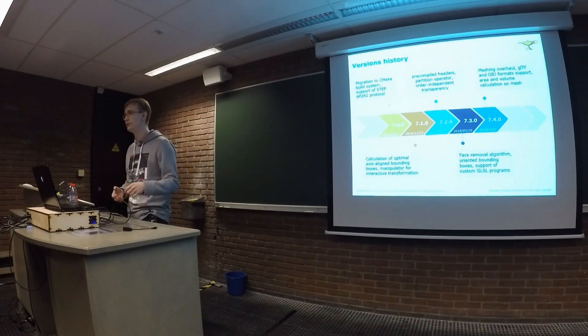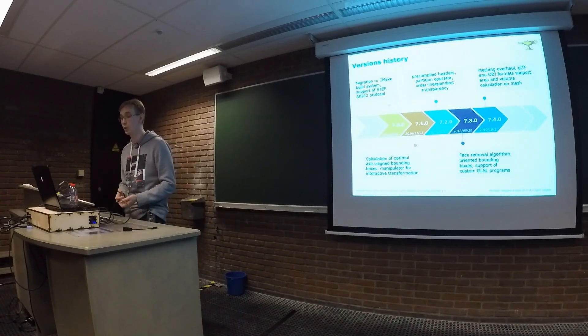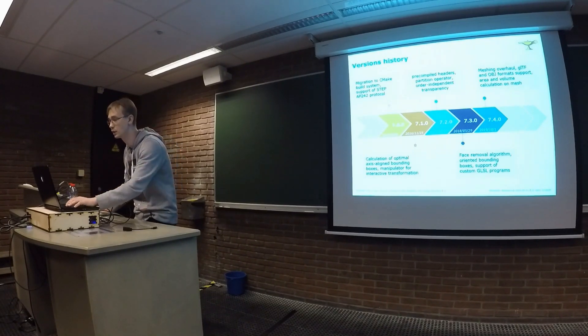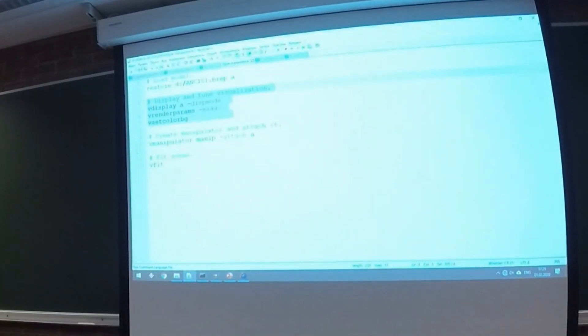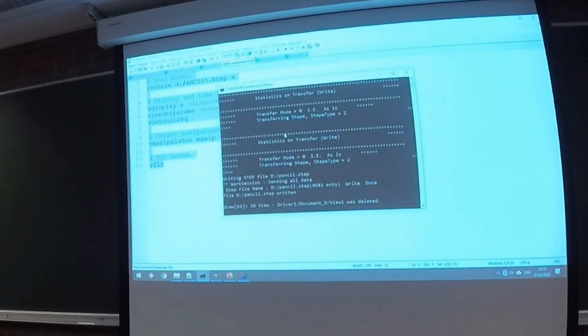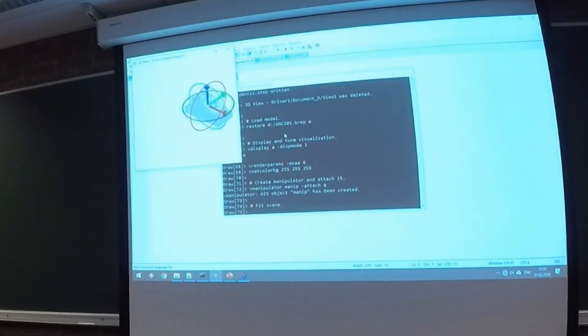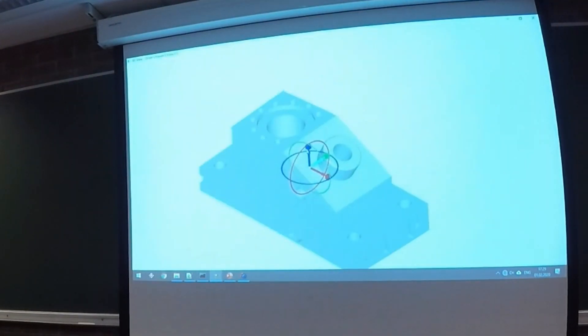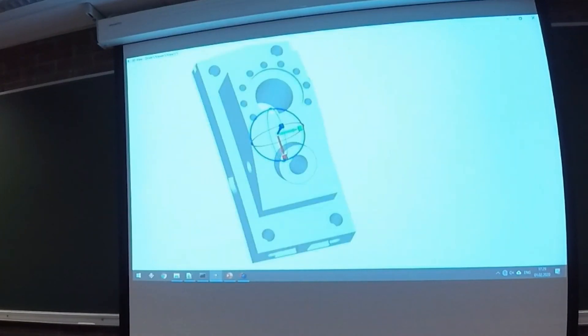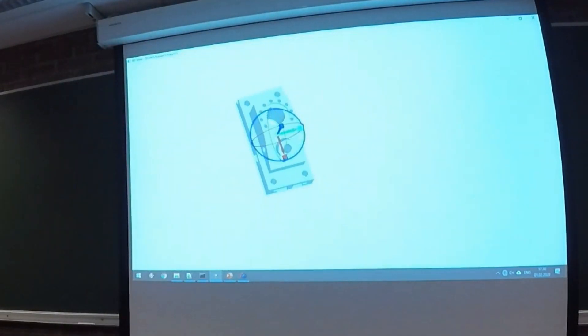VIASManipulator class suits for interactive transformation of objects on the scene. Once again, there is a dedicated demo for that. Let's take a look. Once again, we load model, we display it, and we create a manipulator and attach it to the model. That's all. So we can move along three global axes, x, y, z. We can rotate. We can scale. That's it.